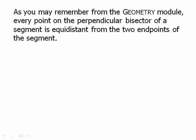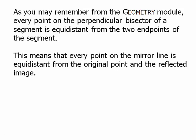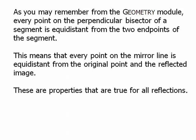As you may remember from the geometry module, every point on the perpendicular bisector of a segment is equidistant from the two endpoints of the segment. This means that every point on the mirror line is equidistant from the original point and the reflection. These properties are true for all reflections, so these are really big ideas.